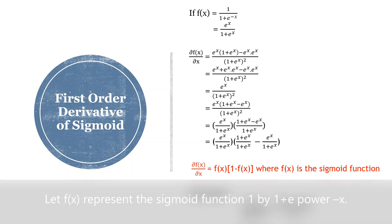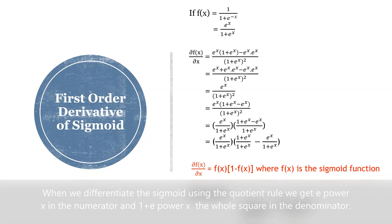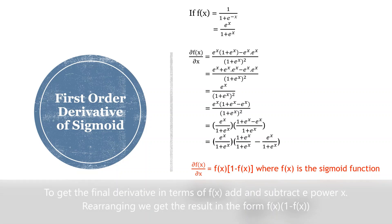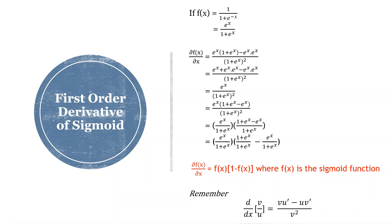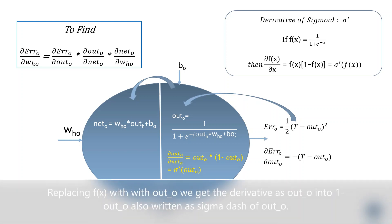Let f(x) represent the sigmoid function 1/(1 + e^(-x)), which can be rewritten as e^x / (1 + e^x). When we differentiate the sigmoid using the quotient rule, we get e^x in the numerator and (1 + e^x)^2 in the denominator. To get the final derivative in terms of f(x), we add and subtract e^x. Rearranging, we get the result in the form f(x) * (1 - f(x)).